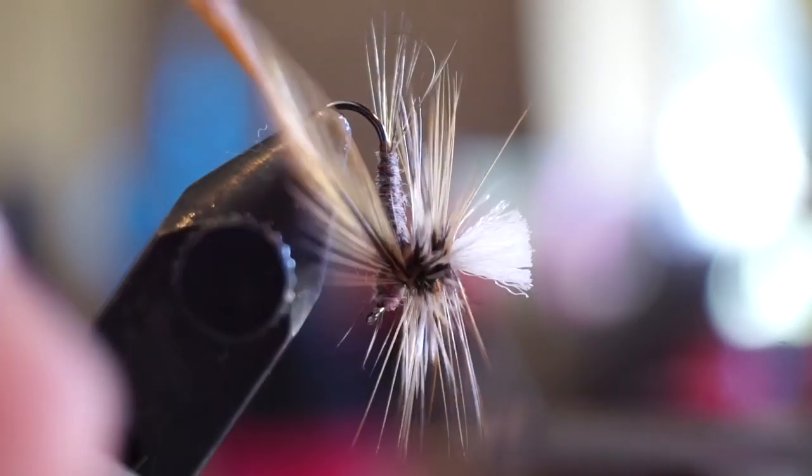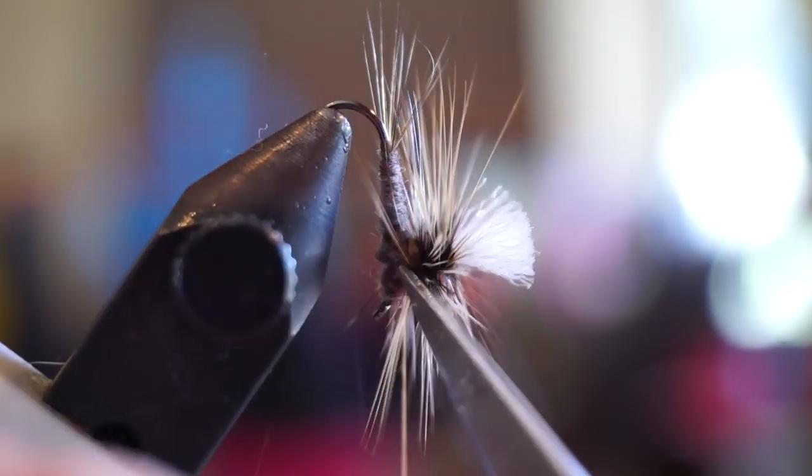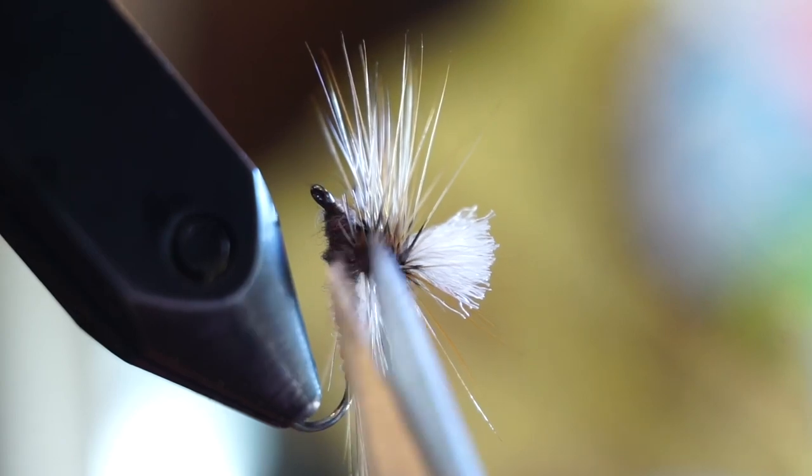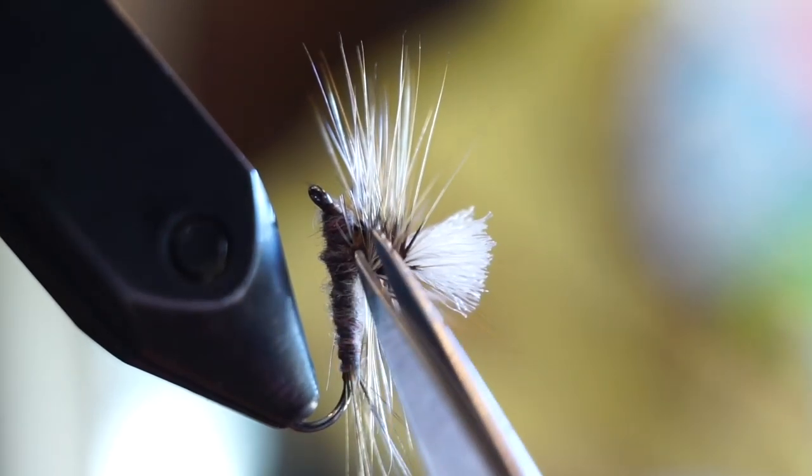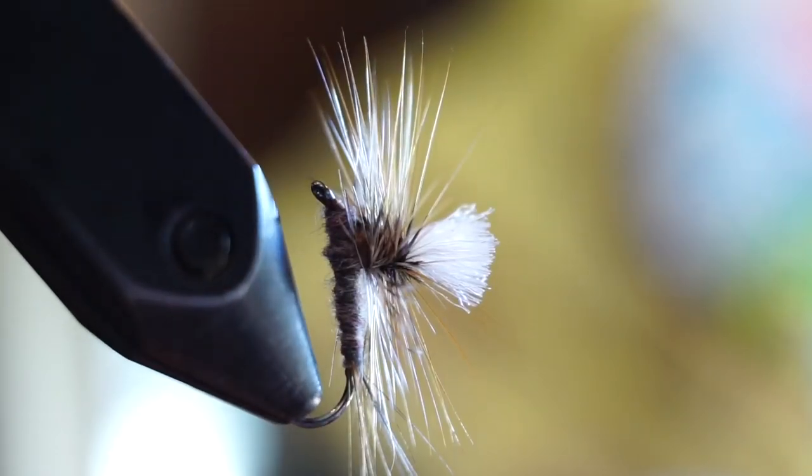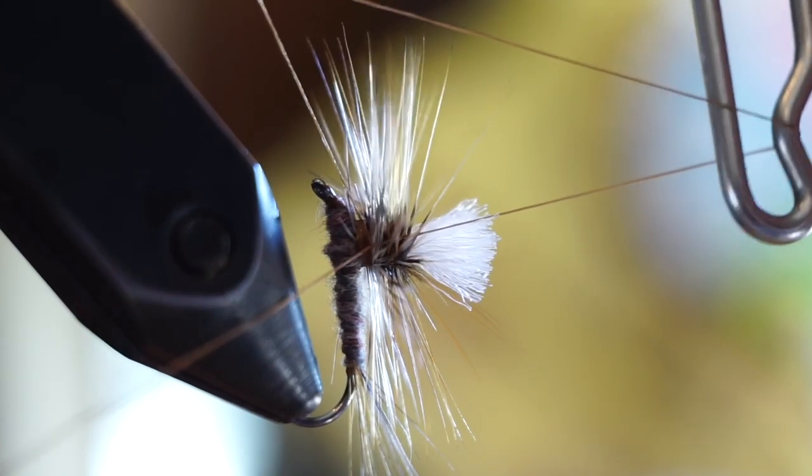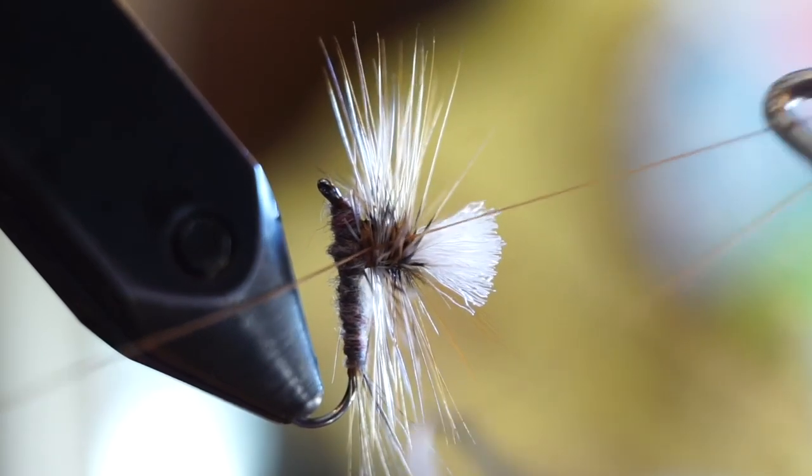Capture the brown hackle in the same way as the grizzly and trim off the excess feather. Now you can cut off any hackle fibers that have gotten trapped. Then simply whip finish the fly under your hackle and right on the parachute post.